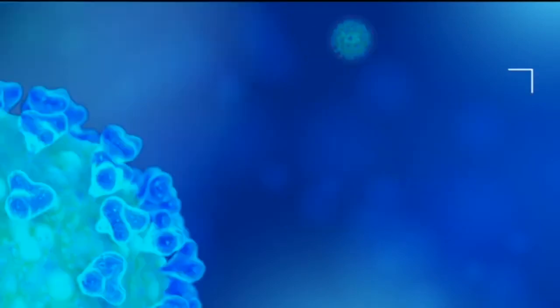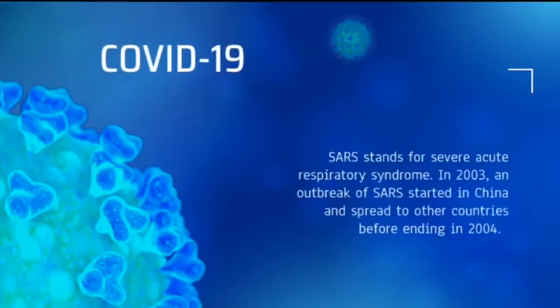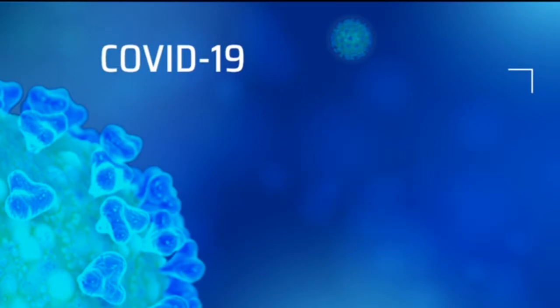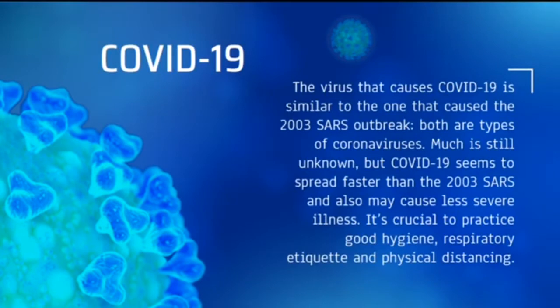SARS stands for Severe Acute Respiratory Syndrome. In 2003, an outbreak of SARS started in China and spread to other countries before ending in 2004. The virus that causes COVID-19 is similar to the one that caused the 2003 SARS outbreak. Both are types of coronaviruses. Much is still unknown.